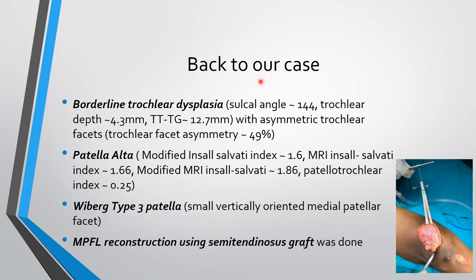Coming back to our case: there is borderline trochlear dysplasia with a sulcal angle of 144 degrees, and trochlear depth of 4.3. TTTG came out to 12.7, with asymmetrical trochlear facets at 49%. There is patella alta as discussed, and Weber type III patella. Considering all these findings, MPFL reconstruction was done using a semitendinosus graft.